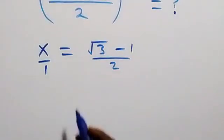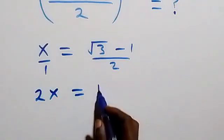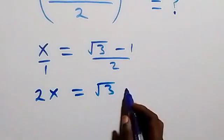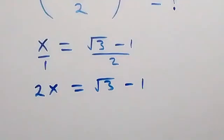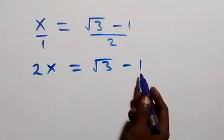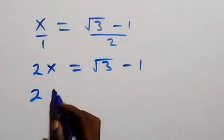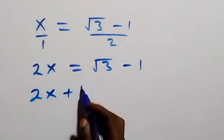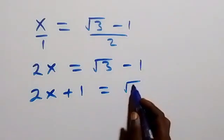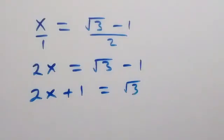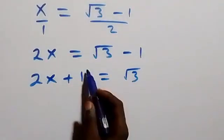This becomes 2x equals to root 3 minus 1. And here let's take 1 to this side — it becomes plus. So we have 2x plus 1 equals to root 3. From here we can square both sides.